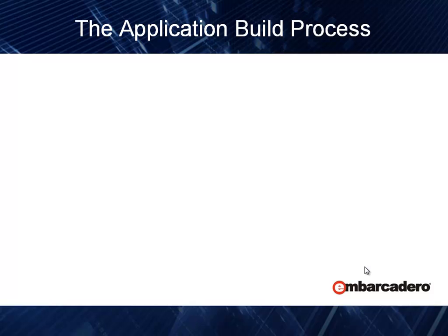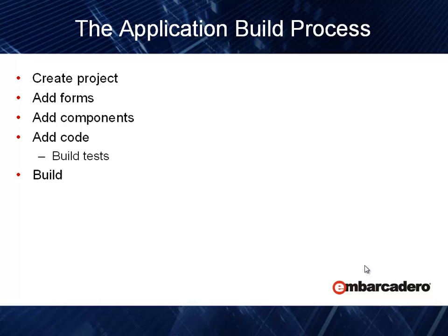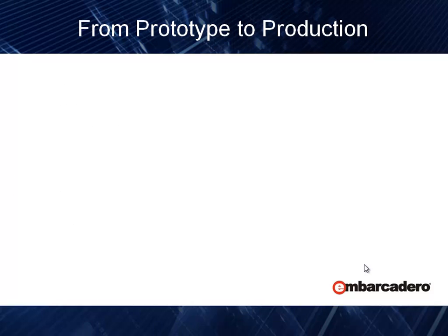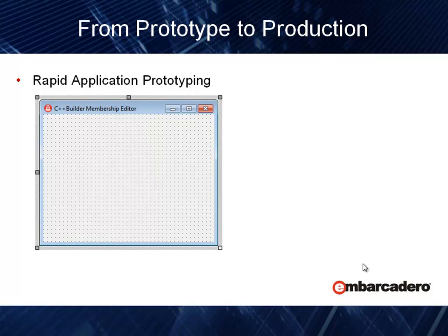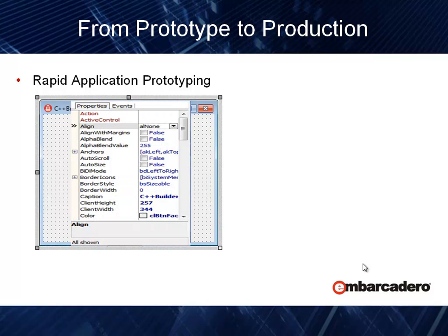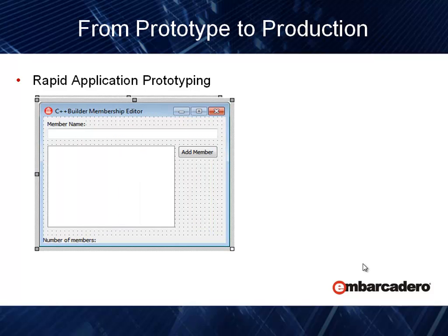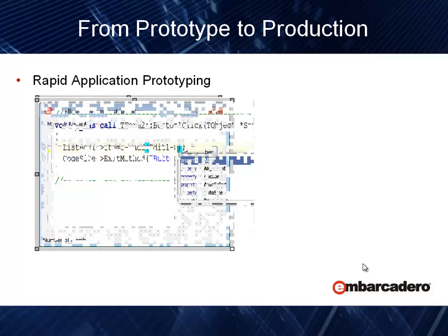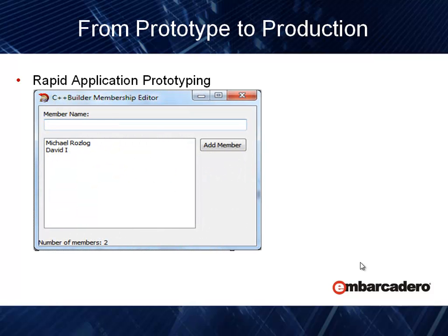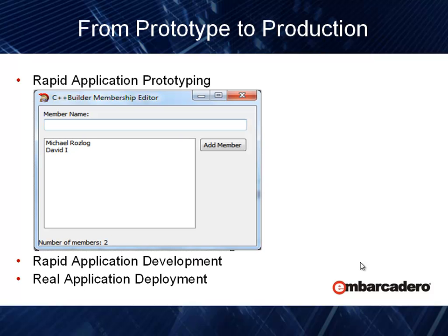The application build process is the same as Delphi and is very straightforward. You create a project, add forms, add components to those forms, add code, build some tests, build the project, test it, and deploy it. From a prototype-to-production standpoint, rapid application prototyping starts with a form where you drop components, set their properties, add some code, and you have a running application at the end of the process. This allows for rapid application development and real application deployment.